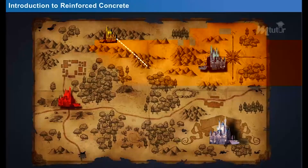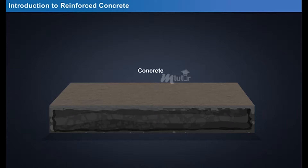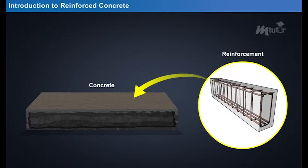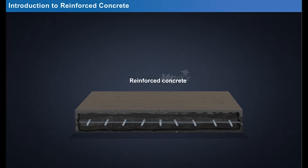Now, you can compare concrete to Missy's power. The strength of Missy doubled by the reinforcement they received. Likewise, if concrete is reinforced, its strength doubles. Together, they make a powerful material called reinforced concrete. Let us learn about reinforced concrete in detail.